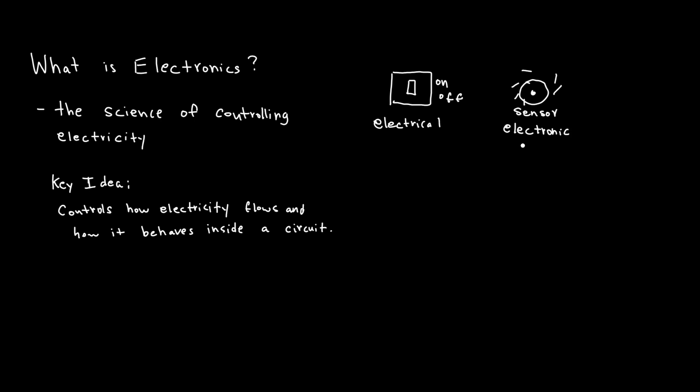Electrical versus electronics: people mix up the terms electrical and electronic all the time. What's the difference? Let's compare them. Electrical moves power, electronic controls signals. Electrical controls motors and lights, electronic examples are like phones and TVs.